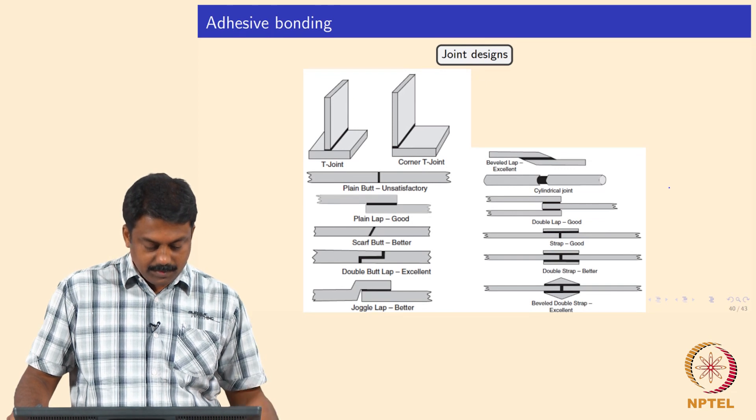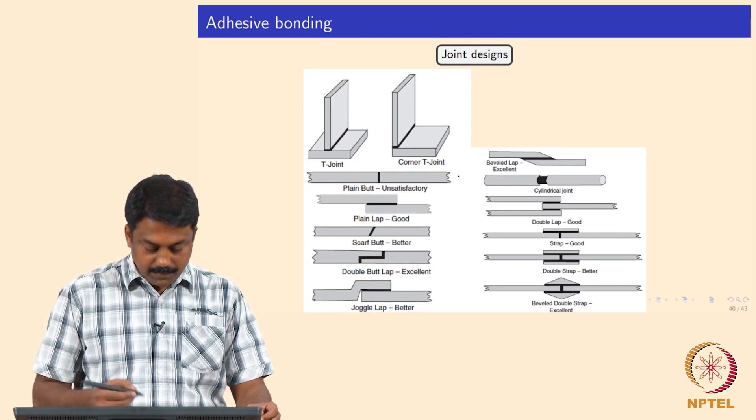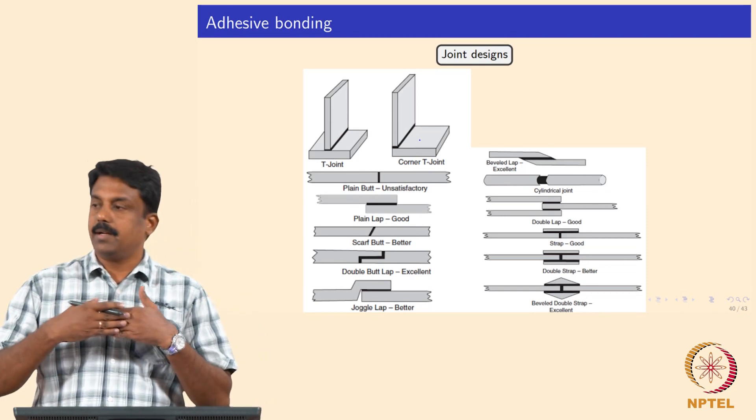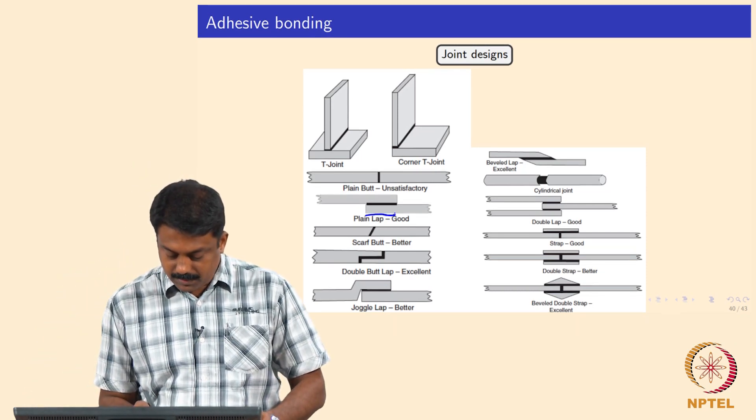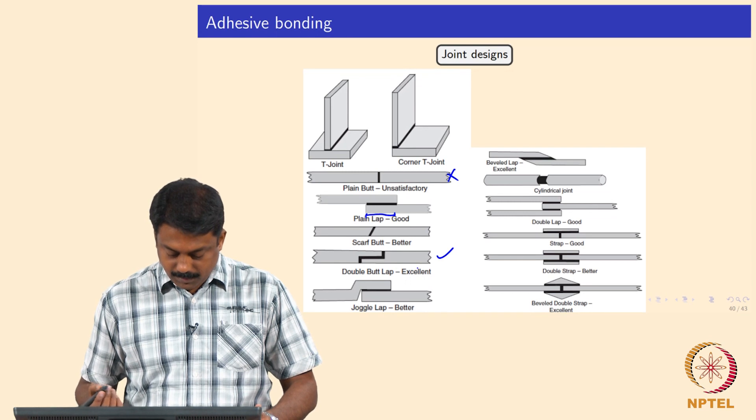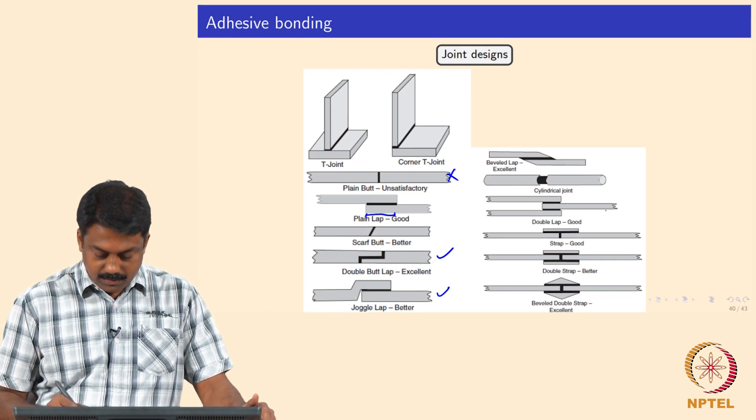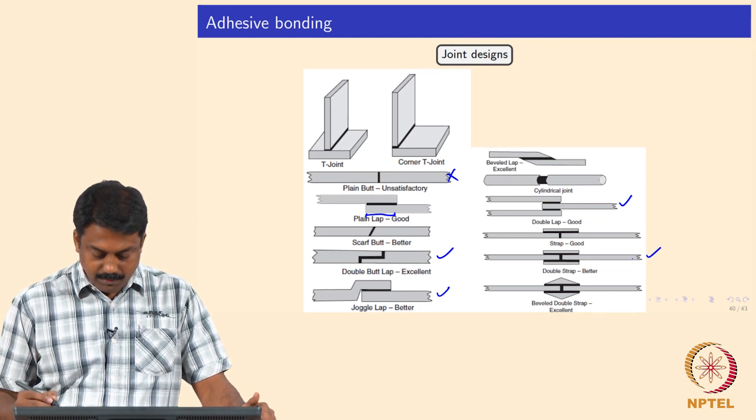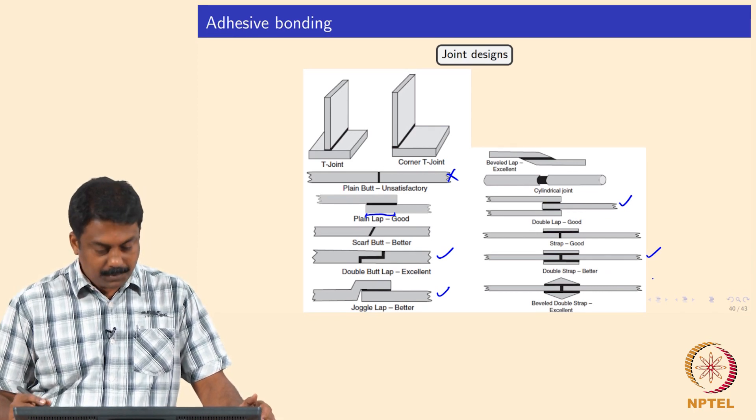For joint designs, the most commonly used joint design is a T joint or corner joint. When you want to do flat sheet adhesive joining, you always have to do it in overlap configuration. You need to have a proper lap distance. Plain butt is not advisable. You can also do double butt lap, joggle lap. Generally adhesive bonding is not done in plain butt. You can also do double strap, beveled double strap.